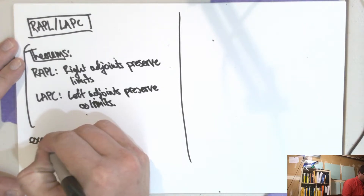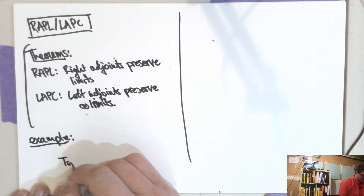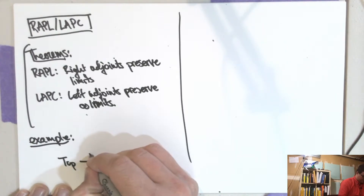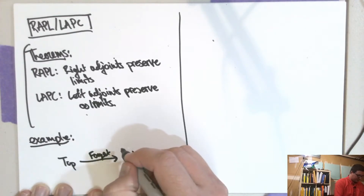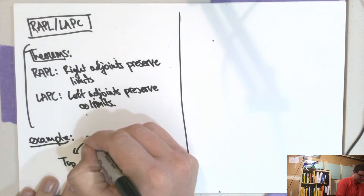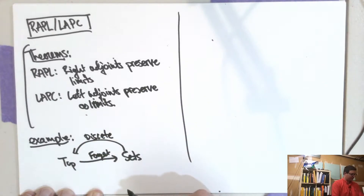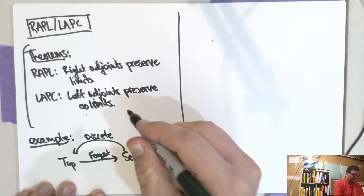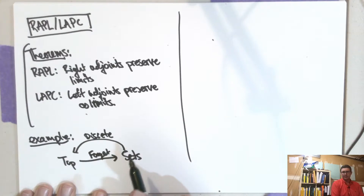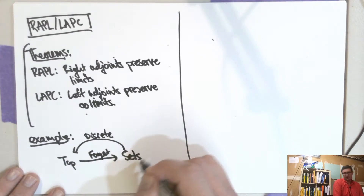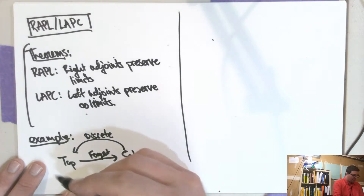Let's look at the category of topological spaces. There's a forgetful functor to sets, and then there are two adjoints. First, there's the discrete topology that you can put on a set — you just make the topology so that all sets are open. Every single one of them is declared to be an open set.